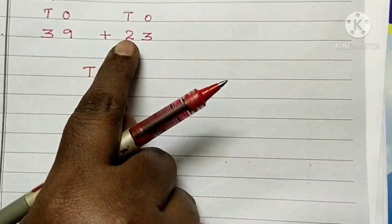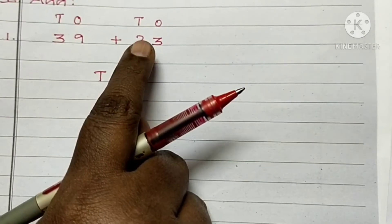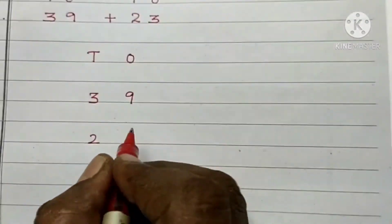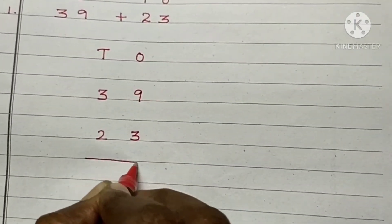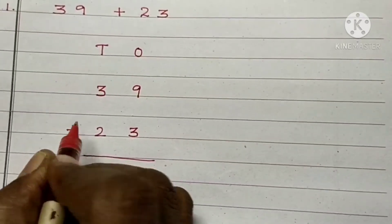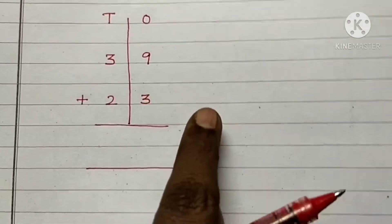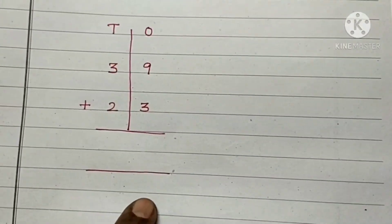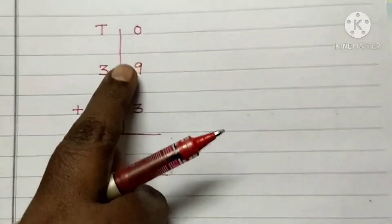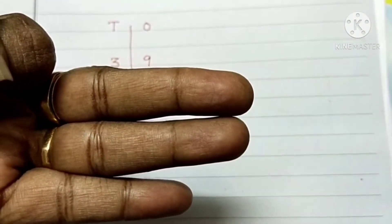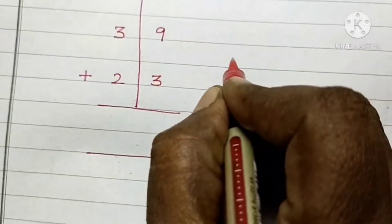In the next number, how many 10's are there? 2 tens. How many 1's are there? 3 ones. First, add the 1's column. How many 1's are there? 9 ones and 3 ones. 9 in the mind, 3 in the fingers. After 9: 10, 11, 12. Write 12 here.